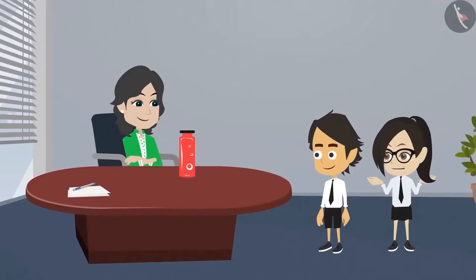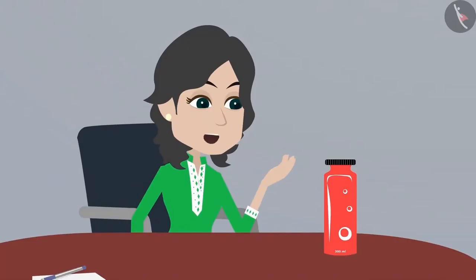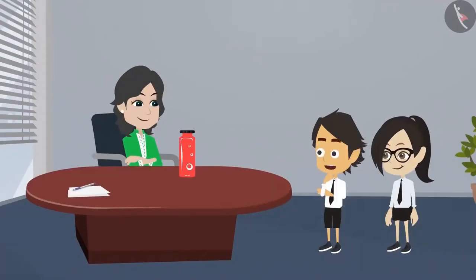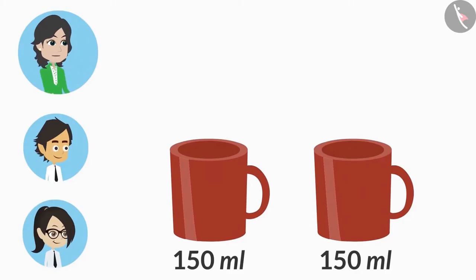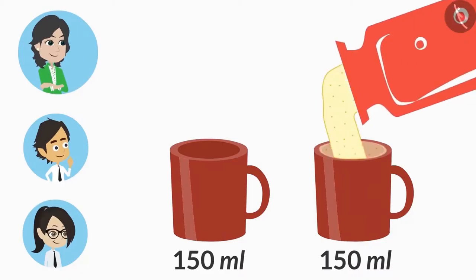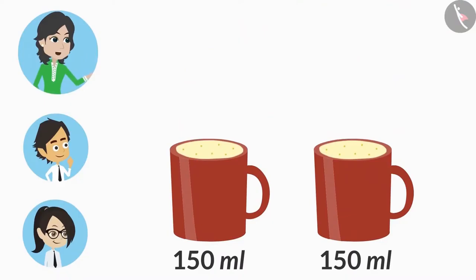But how will we measure 150 ml? There are different measuring cups to measure liquid, but we do not have those cups with us right now. Then how will we measure the buttermilk? I have two cups here. A normal size cup is approximately 150 ml. You can pour the buttermilk into both these cups. Both the cups are completely filled, which means that the buttermilk has been divided into two equal parts.